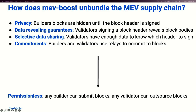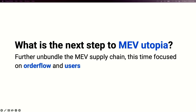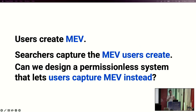So what is the next step in MEV utopia? How are we applying these concepts to other parts of the MEV supply chain? At Flashbots, we focused on users and order flow. Users are creating MEV with their transactions and leaking value into the mempool that is being captured by sophisticated entities — searchers, builders, and often validators. We want to create a permissionless system that lets users and searchers collaborate together for users to internalize that value instead.